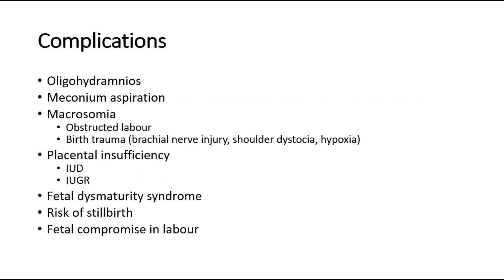So what are the complications and risks towards the baby in post-date pregnancy? There might be oligohydramnios, causing cord compression during labor. Meconium aspiration can also occur, because meconium is thicker due to a reduction in the amount of amniotic fluid, and it can cause blockage to the fetal respiratory pathway.